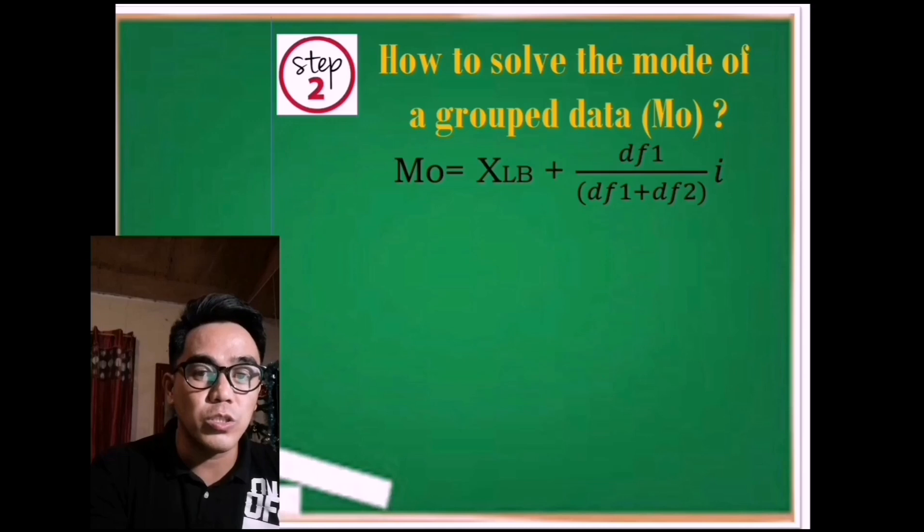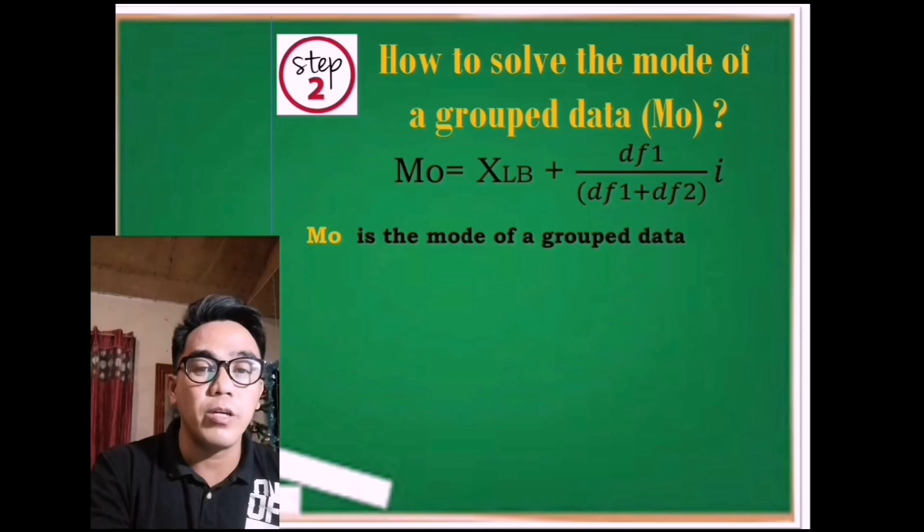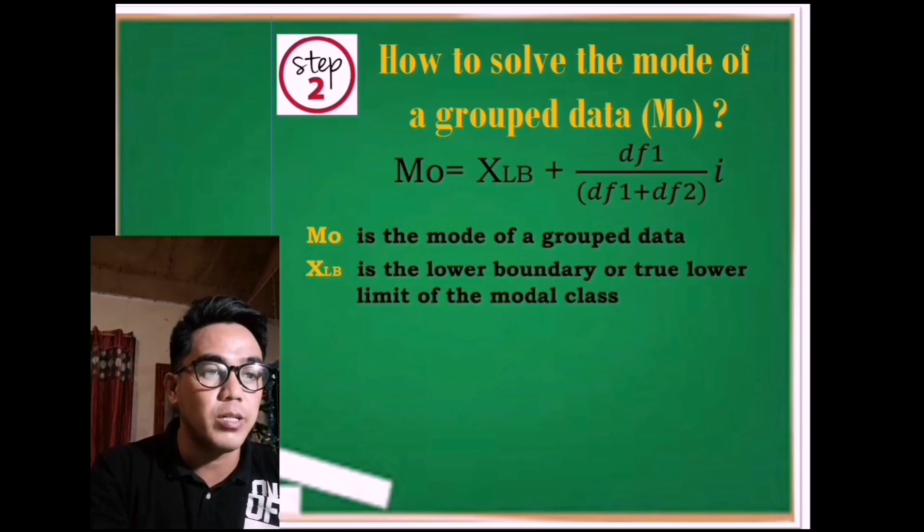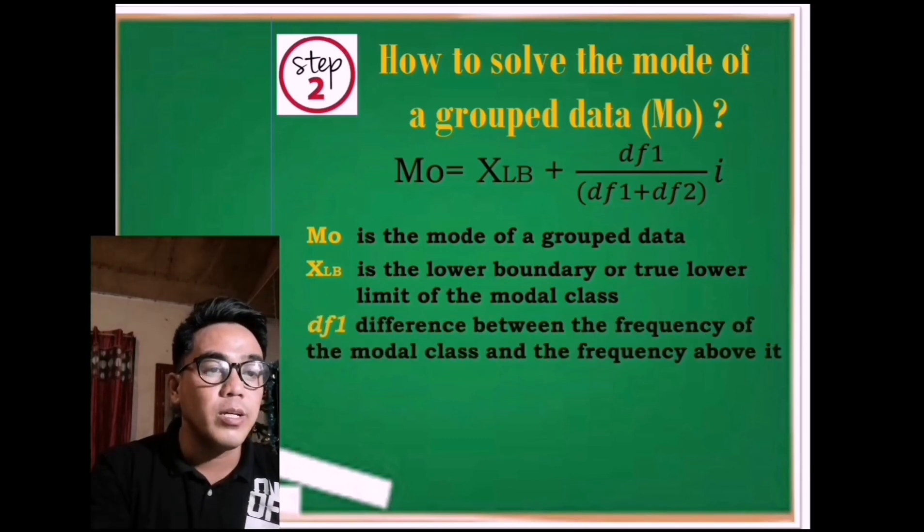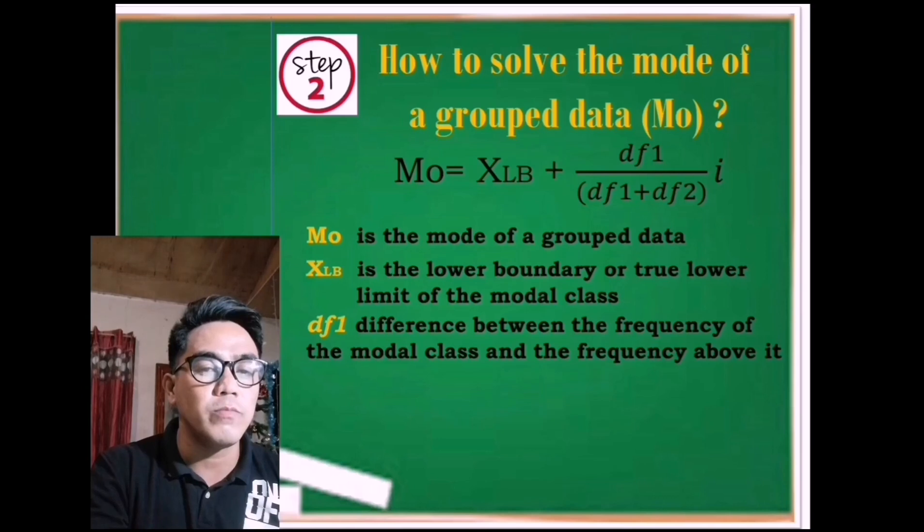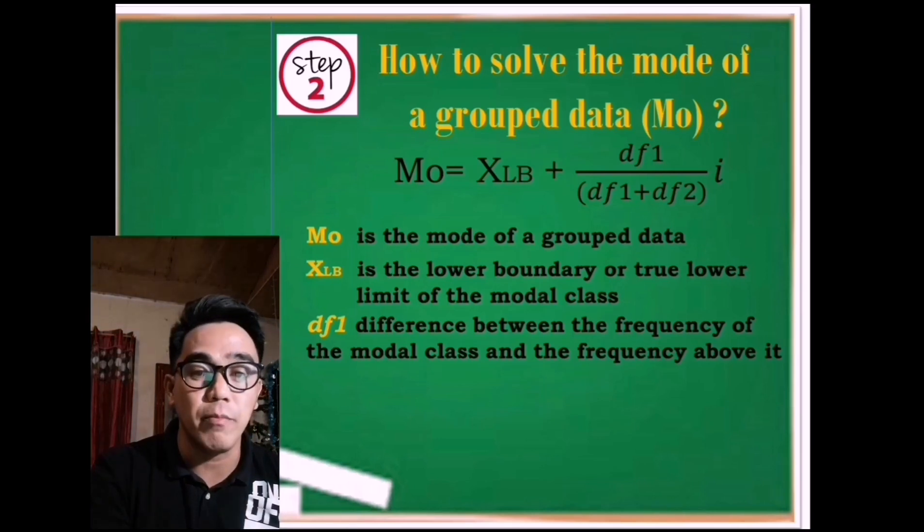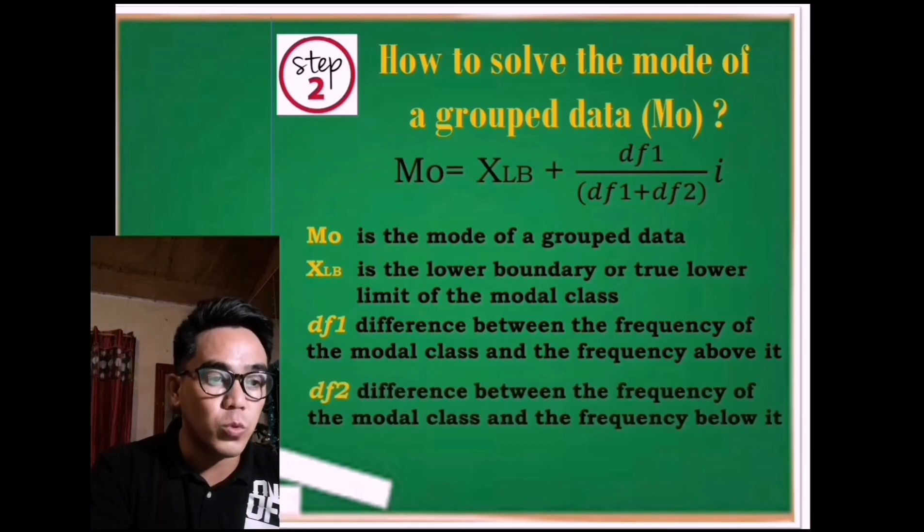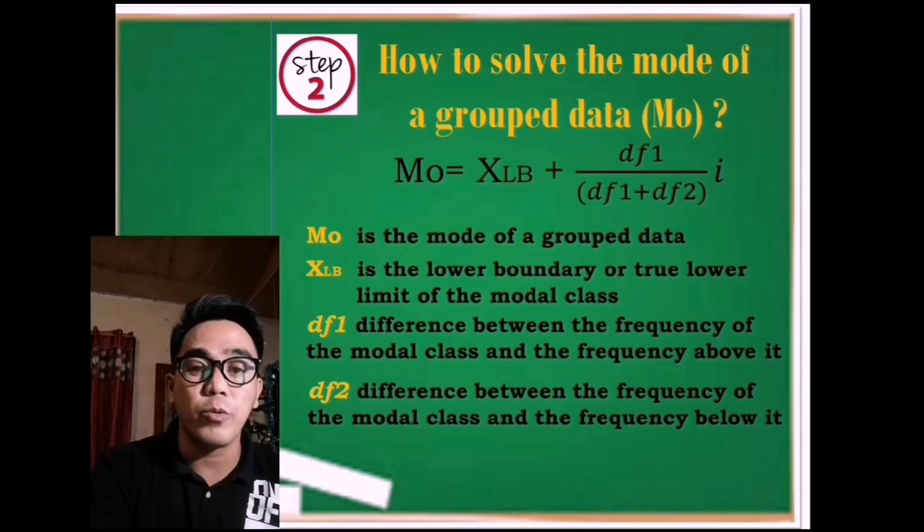Now let us determine each symbol being used in the given formula. Mo is the mode of grouped data. XLB is the lower boundary or true lower limit of the modal class. df1 is the difference between the frequency of the modal class and the frequency above it, while df2 is the difference between the frequency of the modal class and the frequency below it.